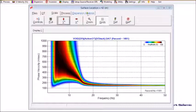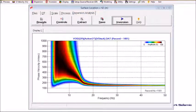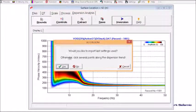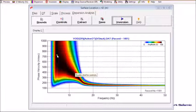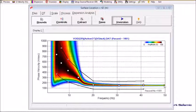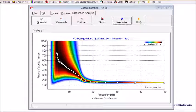And then go to Dispersion Analysis tab here. And then click Bounds. And set the new bounds here. Like this. And then Extract. And I'm going to exclude this one. And then Save.